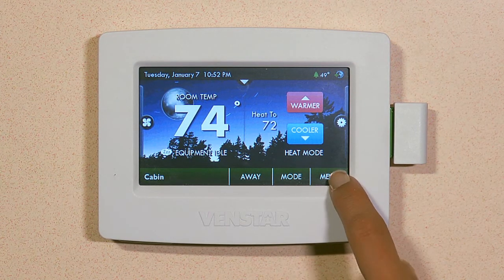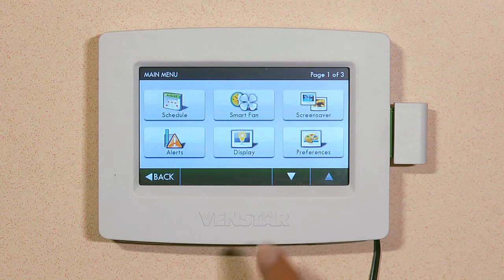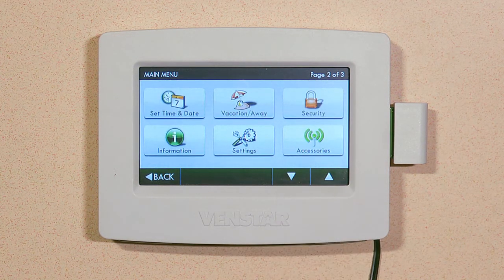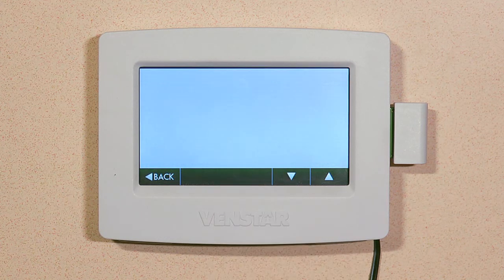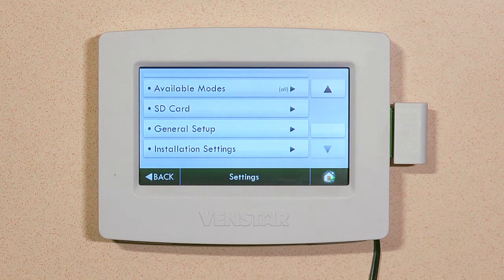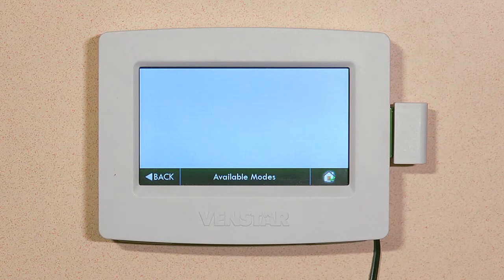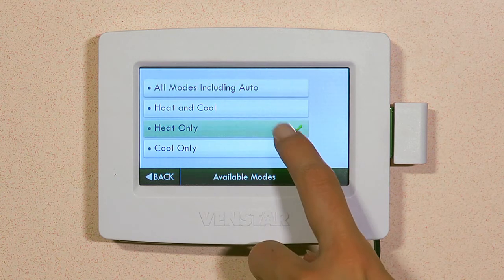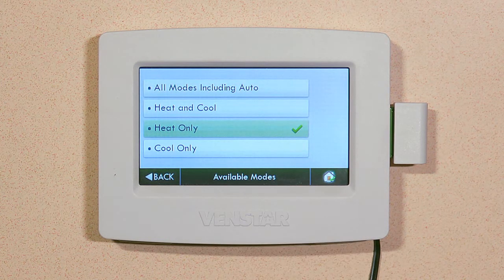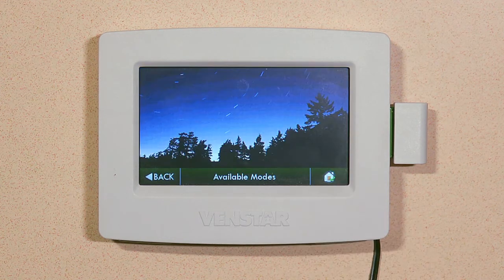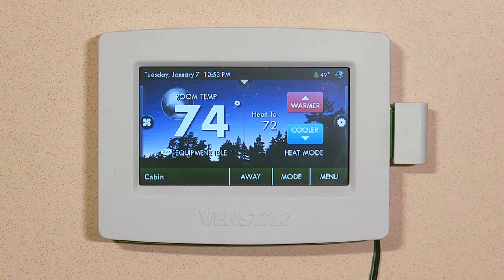Hit Menu. Scroll down. Go to Settings. Press Available Modes. And choose Heat Only. Press Home. Now it is a heat-only thermostat.